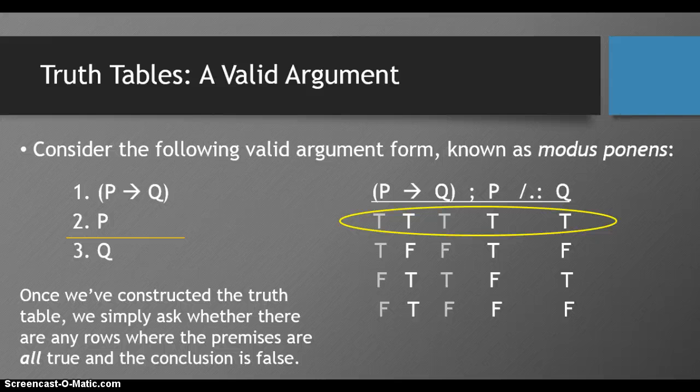Once we've constructed our truth table, we simply ask whether there are any rows where the premises are all true and the conclusion is false. So in the first row, all the premises are true, but the conclusion is true. So it's not the case that all the premises are true and the conclusion is false.